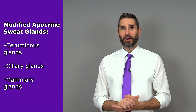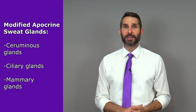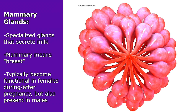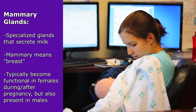The other type of modified apocrine glands you need to know about are called mammary glands. Mammary glands are specialized glands that secrete milk — the word mammary refers to breast. These glands typically only become active in females during and after a pregnancy.